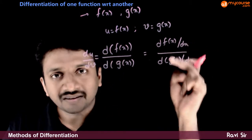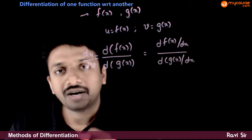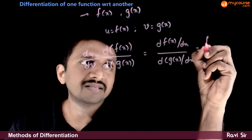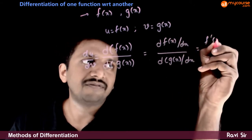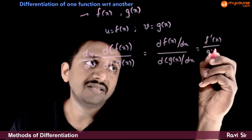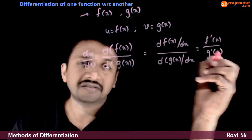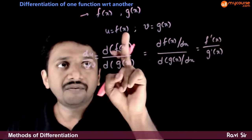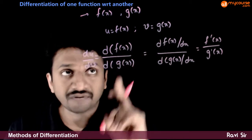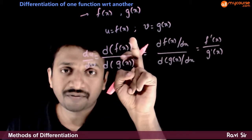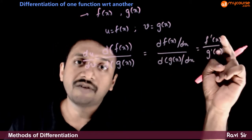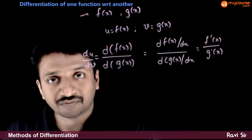So I am dividing both numerator and denominator by dx. What is d of f of x by dx? It is f dash of x. What is d of g of x by dx? It is g dash of x. As simple as this: if you want to differentiate f of x with respect to g of x, it is nothing but d of f of x by d of g of x, which is equal to f dash of x by g dash of x.